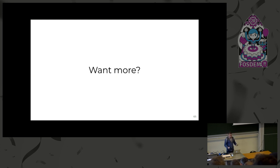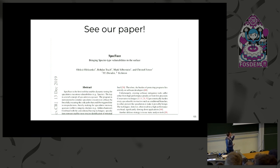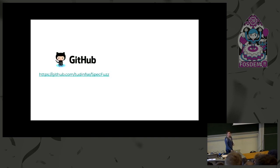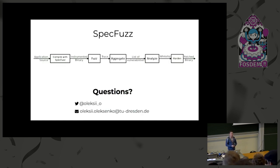That was a rather high-level presentation — there is quite a lot more, such as how we deal with nested mispredictions where several branches could be mispredicted at the same time, and how we collect results. You can see it in our paper, which is openly published on arXiv. We also published the tool on GitHub — here's the link. Please be gentle, as it's first academic code and we recently refactored it, so there might be issues. If you find any, write me or open an issue on GitHub. Thank you — I'll take your questions.